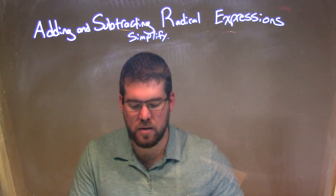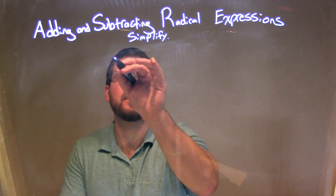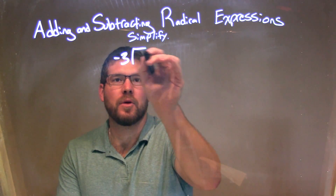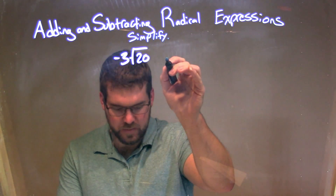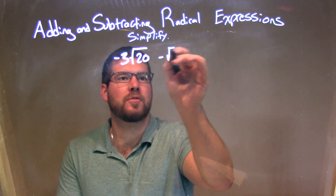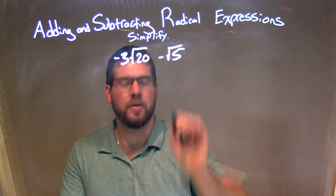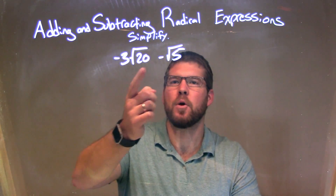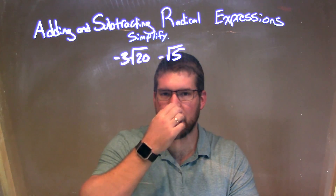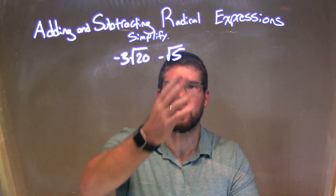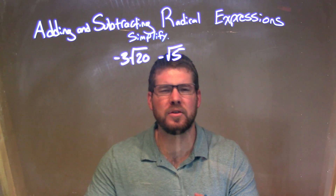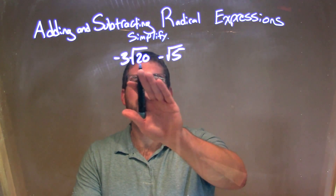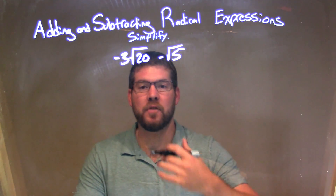So if I had to simplify this problem — negative 3 times the square root of 20, minus the square root of 5 — my goal here is to see if I can get both of these to have the same square root. The square root of 5 can't really break down anywhere, but 20 can. So I'm going to see if I can make 20 have a 5 in it.